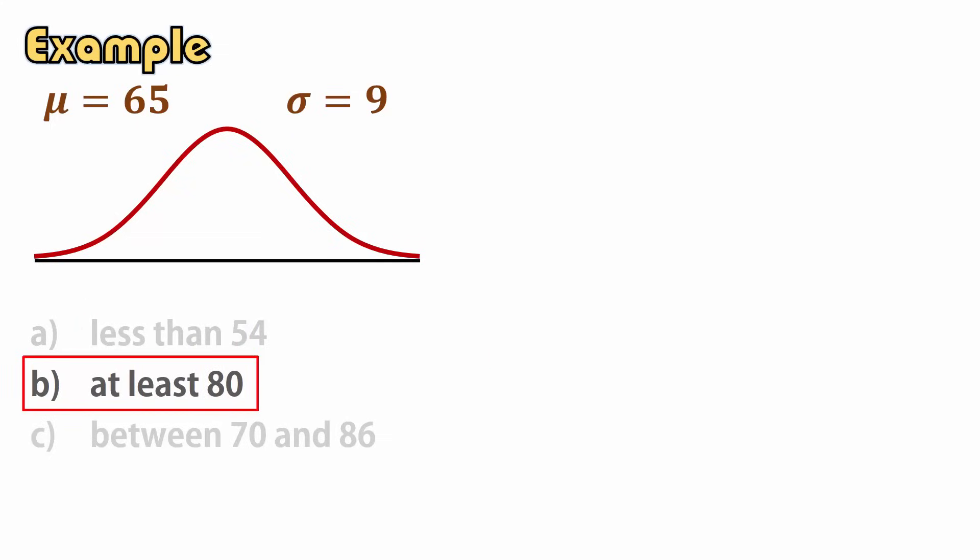In b, we want the probability that x is at least 80. In continuous distributions, like the normal distribution, there is no distinction between x is at least 80 and x is greater than 80. We apply the same approach in both cases.